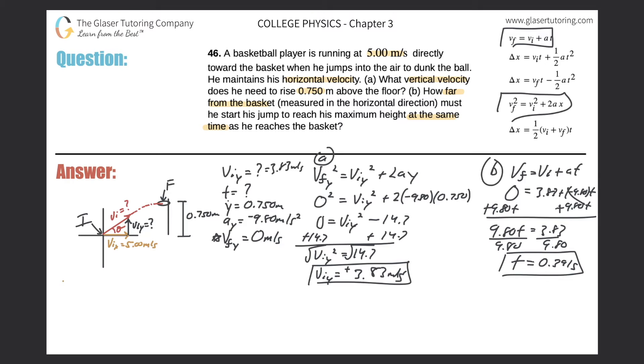Remember that I know the initial velocity in the x direction. That is 5.00 meters per second. There's no acceleration in the x frame. And therefore, I know that my final velocity should be the same as the initial, because there's no change in that velocity.